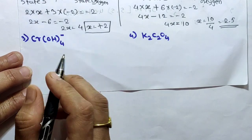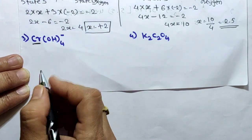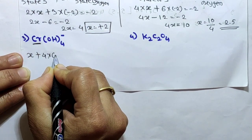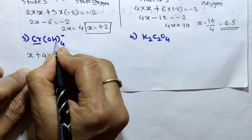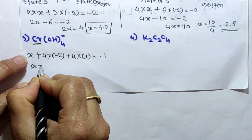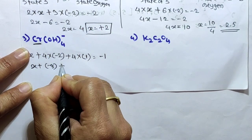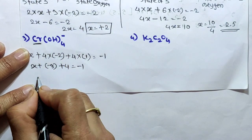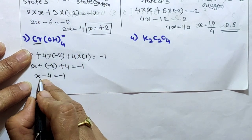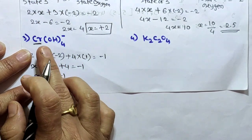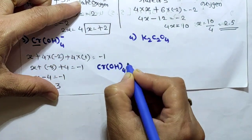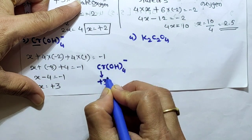Next example: Cr(OH)4⁻. Find the oxidation state of chromium. We write: x + 4×(-2) + 4×(+1) = -1. That is x - 8 + 4 = -1, so x - 4 = -1, therefore x = -1 + 4 = +3. So chromium has oxidation state +3 in Cr(OH)4⁻.